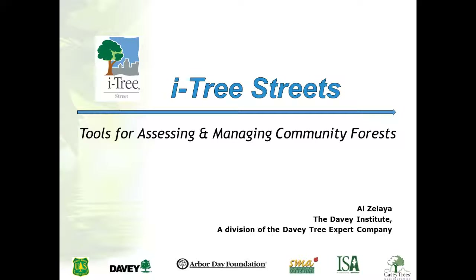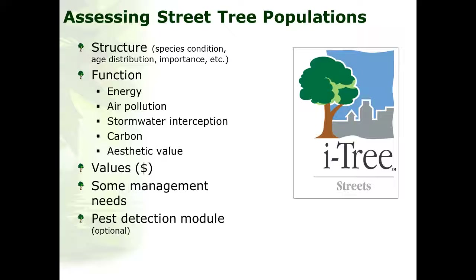In this video I'd like to introduce you to iTreeStreets. iTreeStreets is an assessment tool developed by the U.S. Forest Service's Center for Urban Forest Research, led by Greg McPherson and his team in Davis, California. This tool was originally called Stratum when it was introduced in 2006, and was later changed to iTreeStreets for simplicity. As the name implies, it was developed for assessing street trees and uses street tree inventory data to quantify the dollar value of annual ecosystem services and aesthetic benefits.